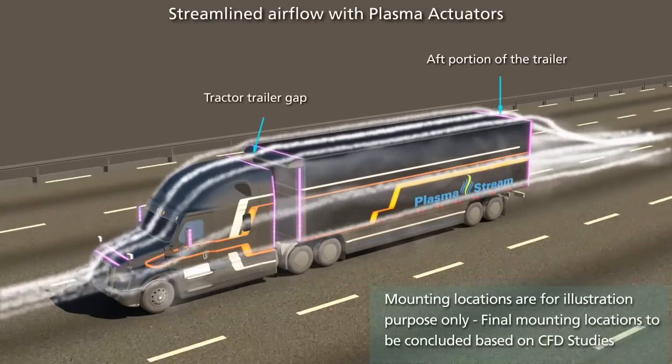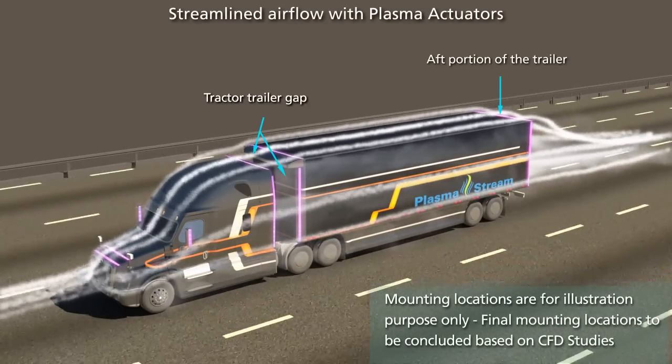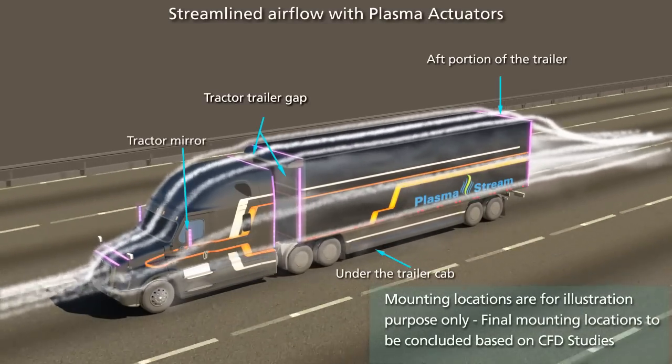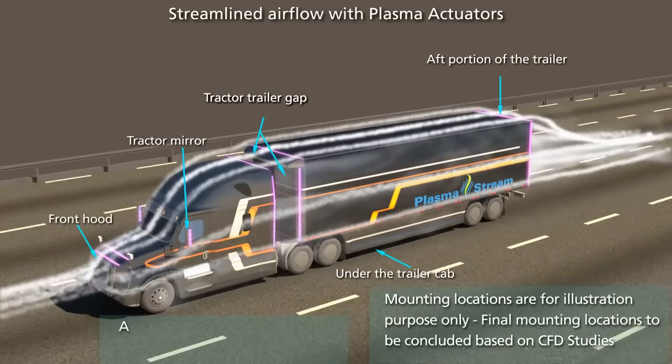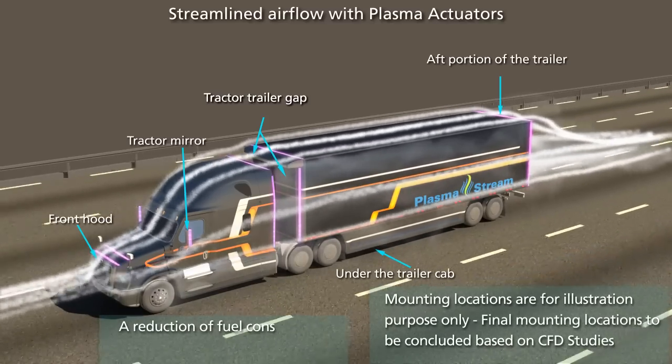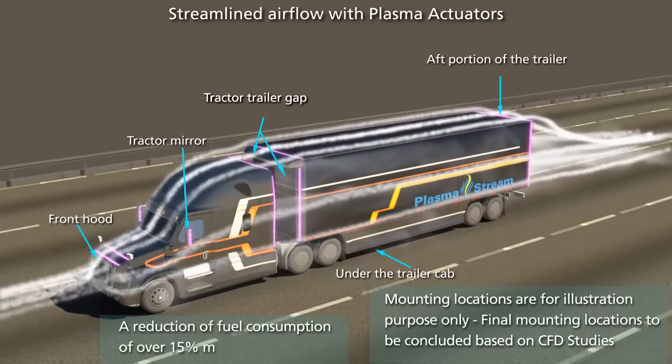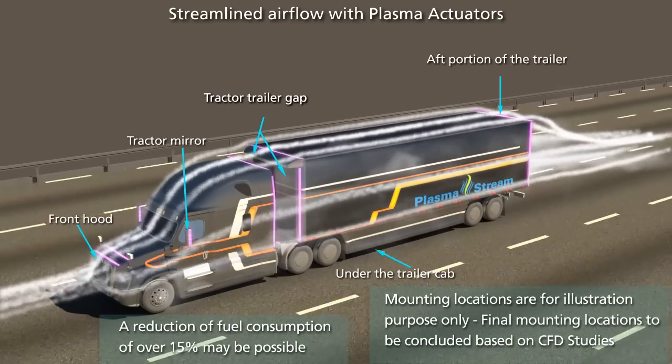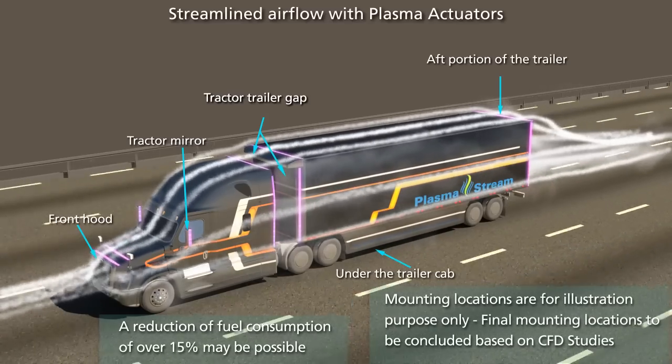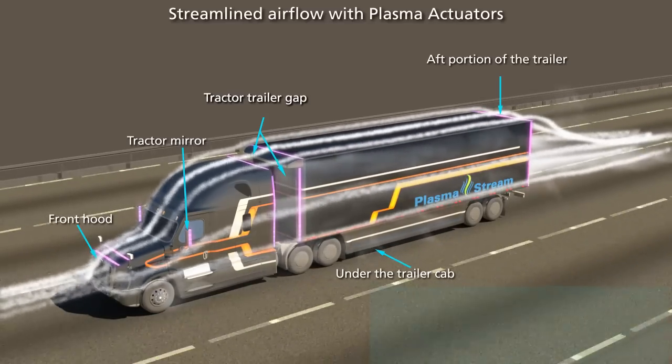PlasmaStream's technology can be installed at various strategic locations around a semi-truck to streamline the aerodynamics. PlasmaStream believes that a reduction of fuel consumption of over 15% may be possible, which would lead to staggering savings for fleets and owner-operators around the world.